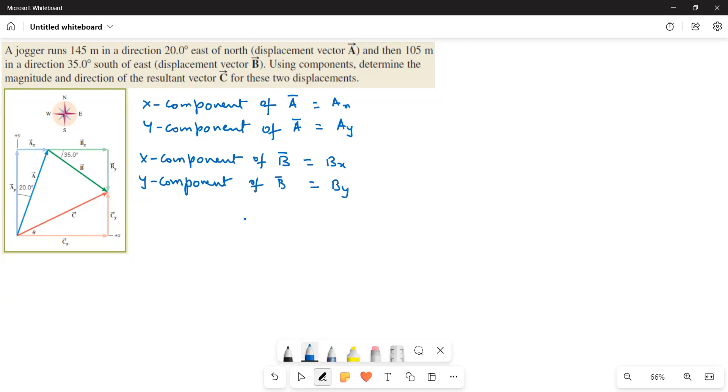And then after finding this one, Cx is equal to Ax plus Bx and then Cy is equal to Ay plus By.